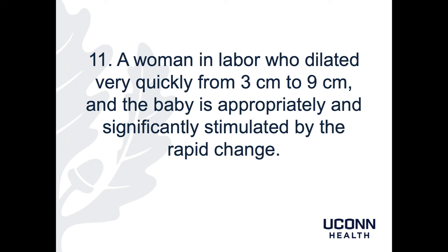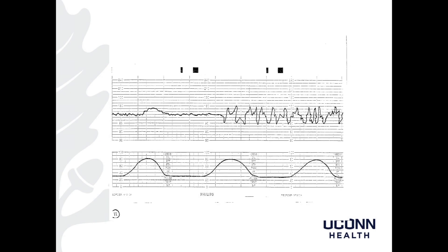Patient 11 is a woman in labor who dilates very quickly from 3 to 9 centimeters, and the baby is appropriately and significantly stimulated by that rapid change. My read: baseline of 120s. There is initially moderate, followed by marked variability. Accelerations are present, decelerations are absent. That would make this Category 2. You can really see the abrupt change in the fetus going from 3 to 9 centimeters, with all of a sudden very marked variability. This isn't concerning, but it was definitely a surprise to the baby.